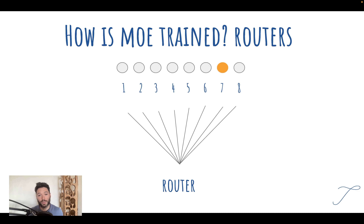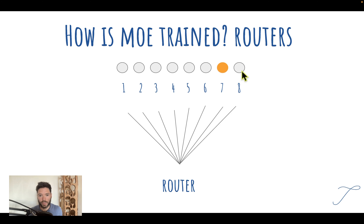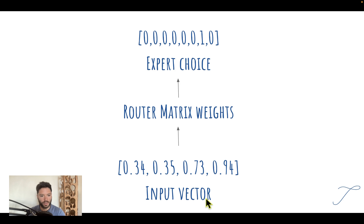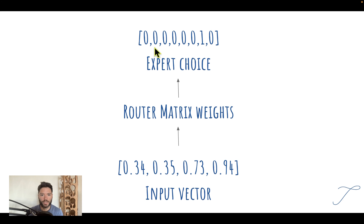And to do that, we need to use a router. The idea behind mixture of experts is to take a model and, before doing the training, split it into a number of experts — let's say eight experts. Additionally, we need a router that decides which expert to call based on the inputs. So rather than inputs going directly through all of our model, we get the router to choose which column of the model in this simplified example we're going to call.